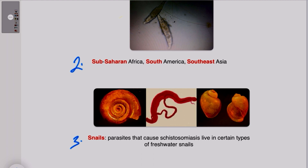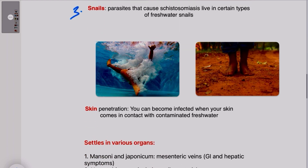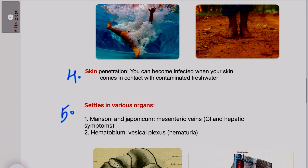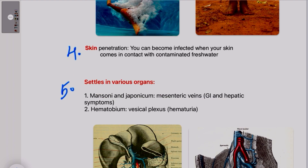The third S is for snails. The parasites responsible for schistosomiasis live in certain types of freshwater snails, so it is very important to remember that snails are involved in the life cycle of this parasite. The fourth S is for skin penetration — people become infected when they come in contact with contaminated fresh water.